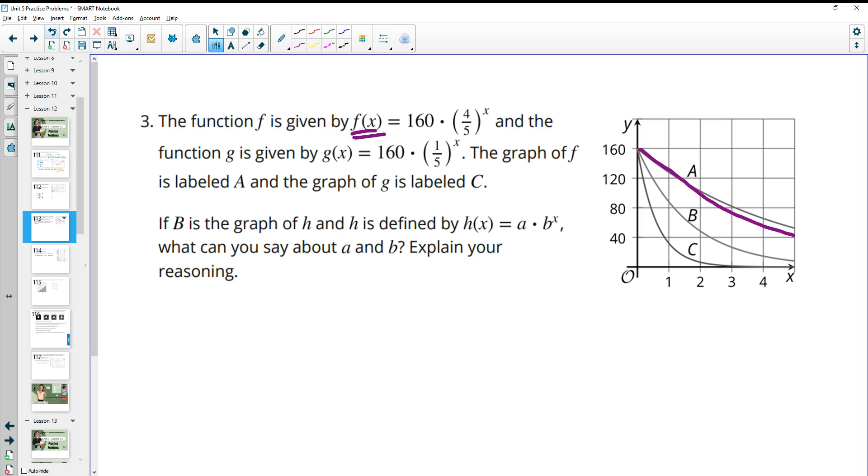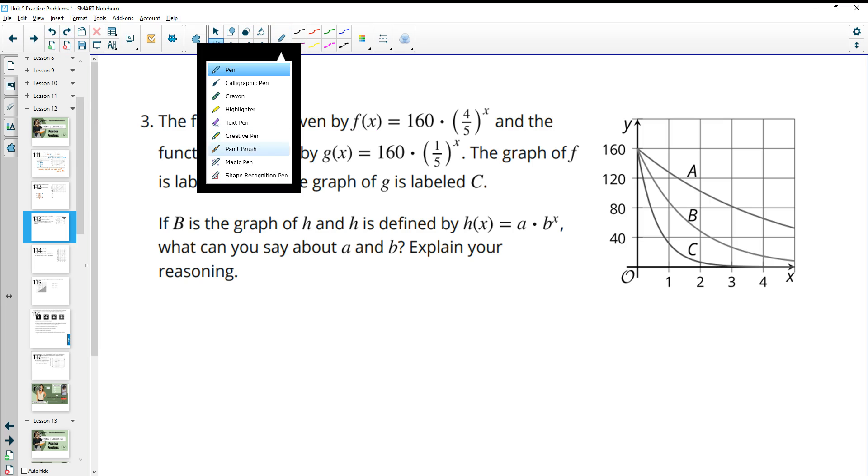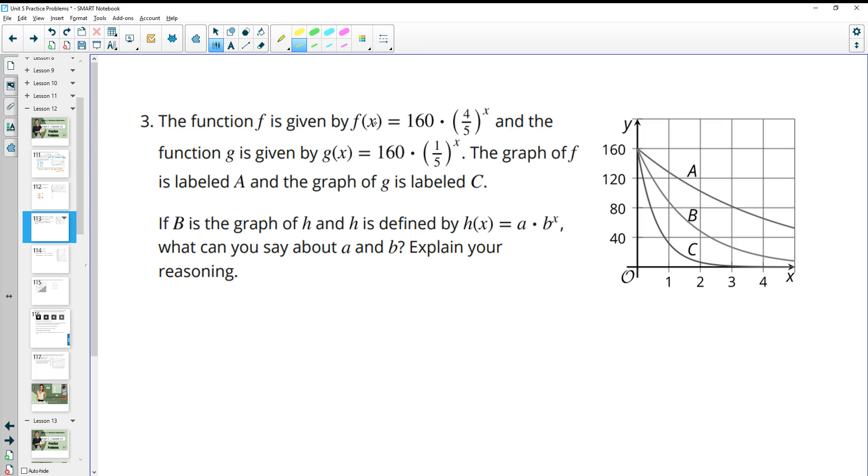So this top one here is this. Let me use a highlighter instead. That might be easier. So this one is this graph up here. And then g(x) is the graph labeled c, so that's this one down here.